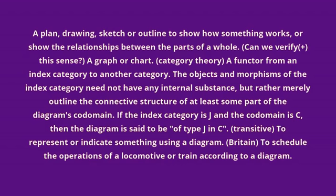If the index category is J and the codomain is C, then the diagram is said to be of type J in C. Transitive: to represent or indicate something using a diagram.